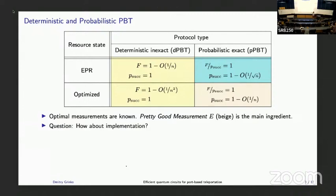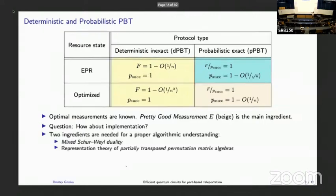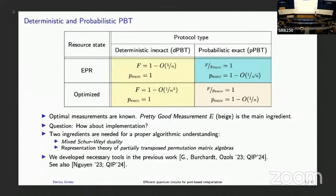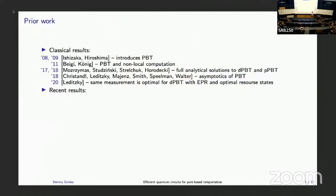Analytical calculations for these were done some time ago. To answer how to actually implement them, we need two main ingredients: Schur-Weyl duality, which is a generalization of standard Schur-Weyl duality, and representation theory of partially transposed permutation matrix algebras. I won't have time to properly explain those concepts here, so I refer you to our previous work presented at QIP, where we described these two main ingredients. A relevant paper by Clinton Goh also described the Schur-Weyl duality ingredient.